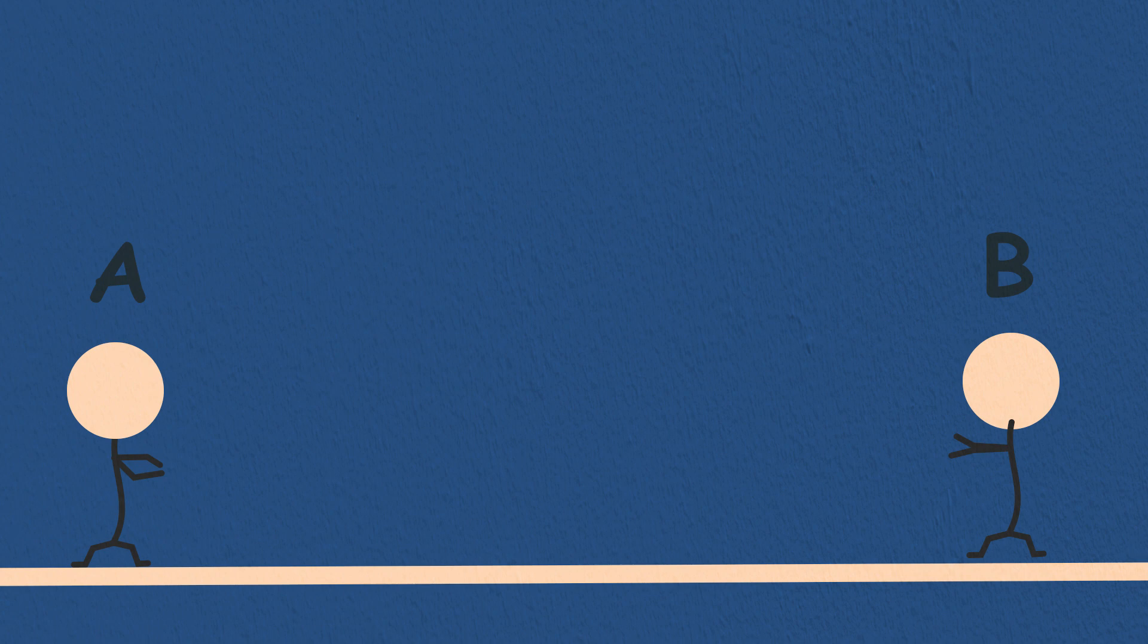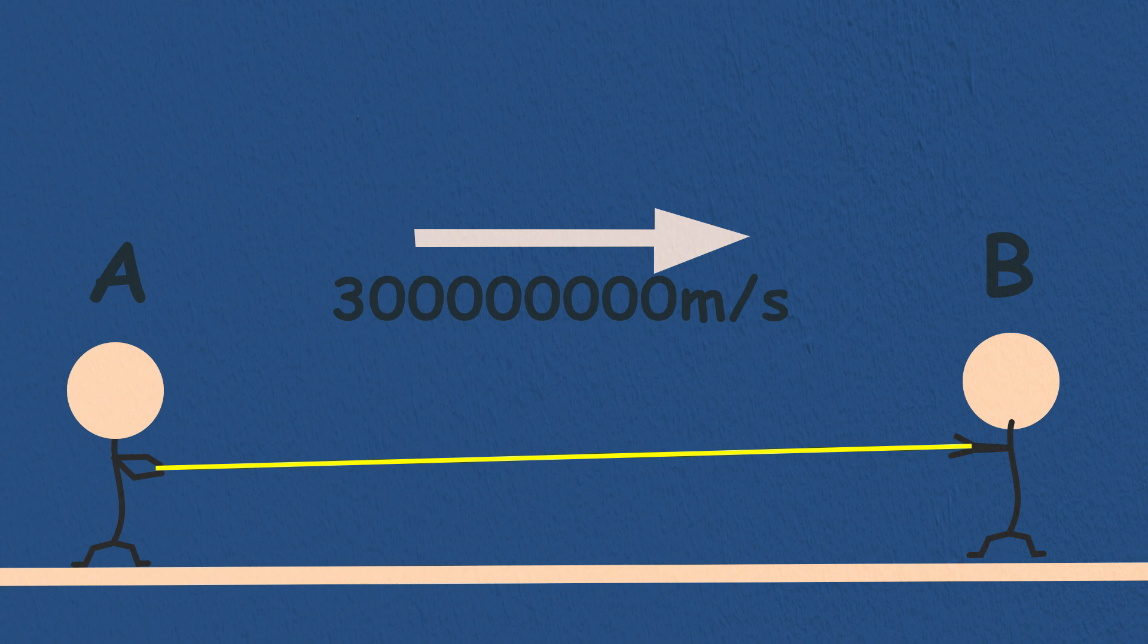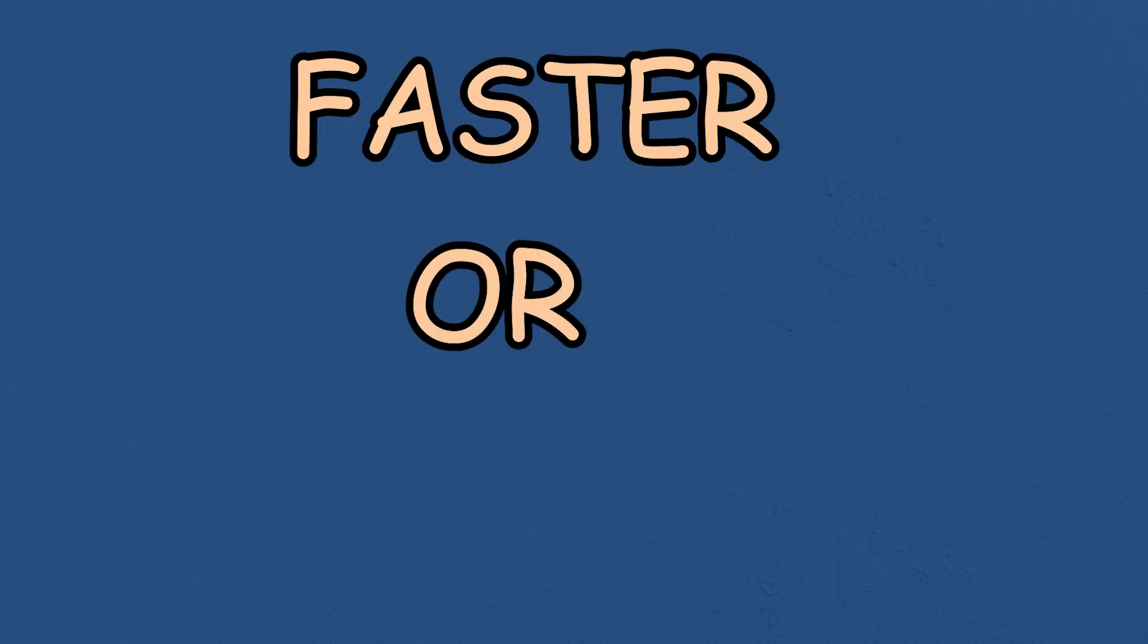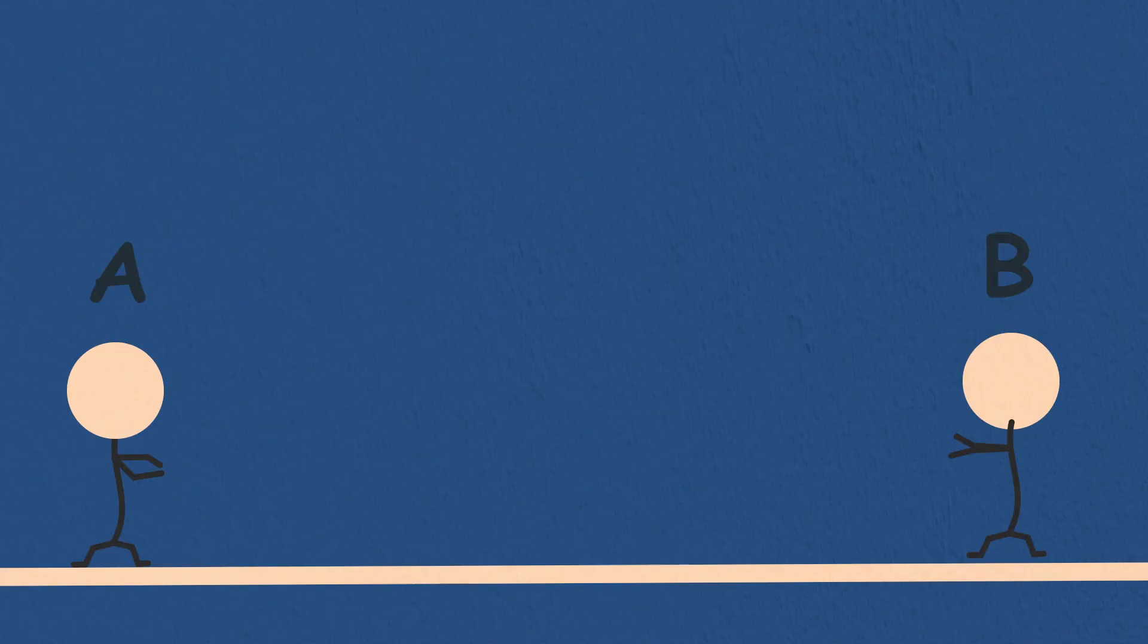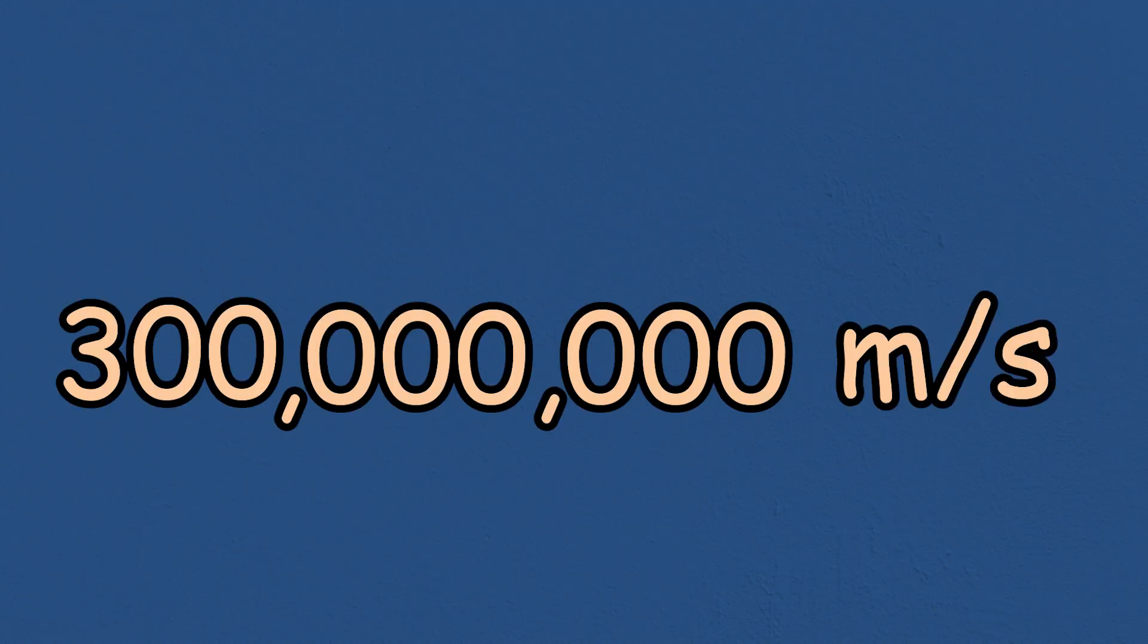Now let's replace the ball with light particles. No matter how B moves towards or away, faster or slower, the speed at which B sees the light particles coming towards him is always 300 million meters per second. It never changes. And that is the second rule of relativity.